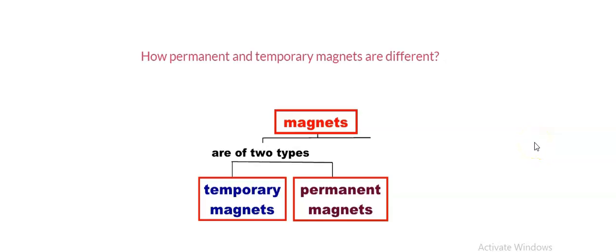Welcome back to another episode of part two of lesson of magnetism. Today we're going to be talking about how permanent and temporary magnets are different and a little bit about magnetic field, but first we're going to start with what magnetic fields are.